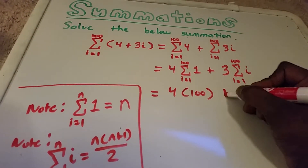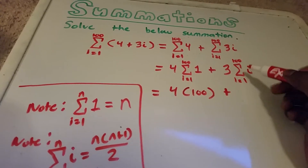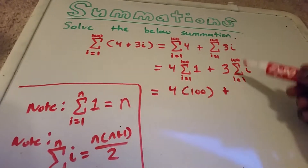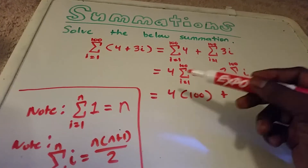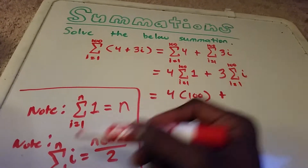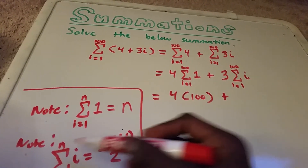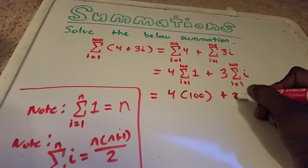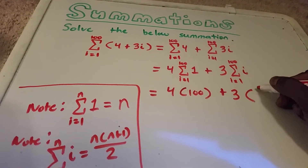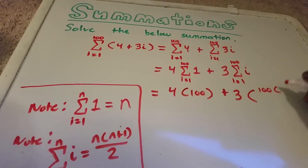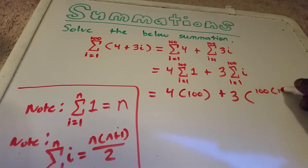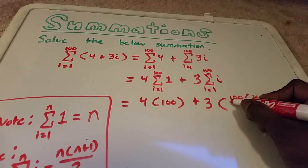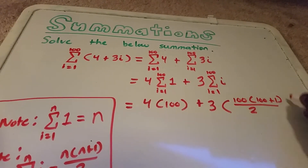Using the second formula for the sum from i equals 1 to 100 of i, we just replace n with 100. So we have 3 times 100 times 100 plus 1, divided by 2.